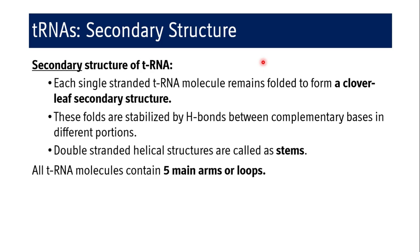The secondary structure of tRNA is described as a cloverleaf structure. Each single-stranded tRNA molecule folds on itself to form this cloverleaf secondary structure. These folds are stabilized by hydrogen bonds between complementary bases in the different portions of the single linear strand. The double-stranded helical portions formed by hydrogen bonding between complementary bases are called stems, and at the end of each stem there is a loop where there are no complementary base pairs.